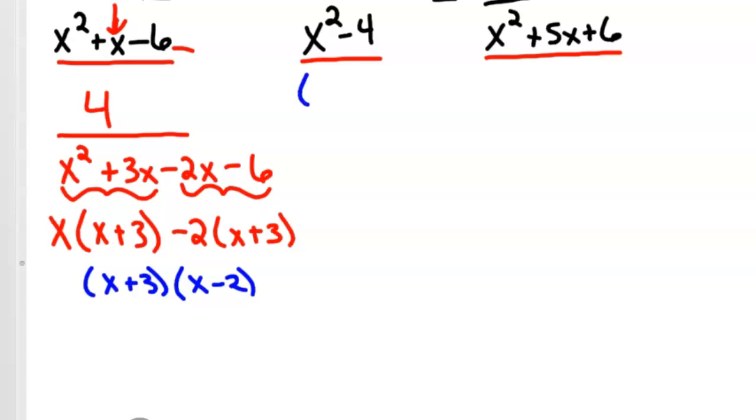This factors then to x plus 3. If you take out an x plus 3, you can reverse, just think of it as reverse distribution, and you're left with x minus 2. So there's the bottom factor. The middle chunk, that's difference of squares, so that factors to x minus 2x plus 2.